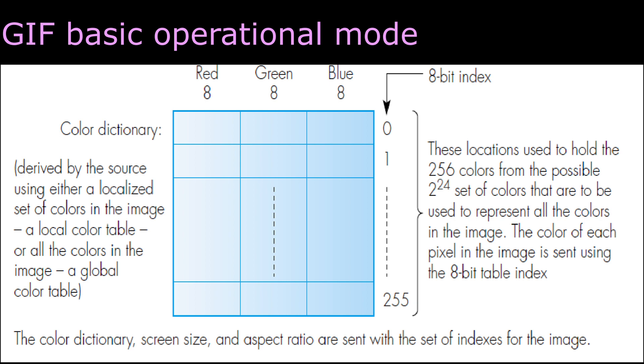These colors are derived from the global color table or from the local color table. The global color table relates to the color present in the entire image, whereas the local color table relates to the colors present in a portion of the image.